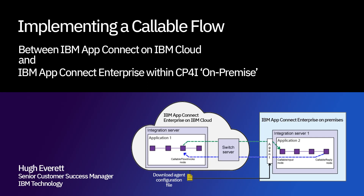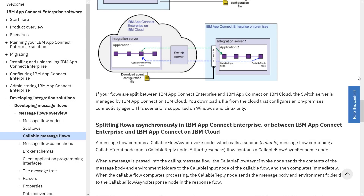Hello. In this session I would like to illustrate how one implements callable flows between IBM AppConnect Enterprise on the cloud and AppConnect Enterprise on-premises. I'll be specifically looking at the case where AppConnect Enterprise is implemented in IBM Cloud Pak for Integration, CP4i. I'm showing on the screen the IBM Knowledge Center for IBM AppConnect Enterprise software, specifically the callable message flow section, which includes a diagram that illustrates the scenario I'll be setting up.